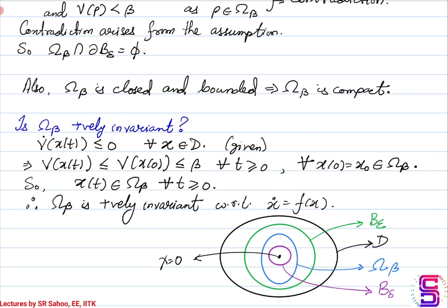This completes the first part of the proof where we establish that inside the epsilon ball, we are able to find a positively invariant set. The next would be to prove that the solution exists for all time t greater than or equal to 0 if we start inside this positively invariant compact set, and then we will show that we can find a delta ball such that the epsilon-delta stability condition is satisfied for the origin. Thank you.